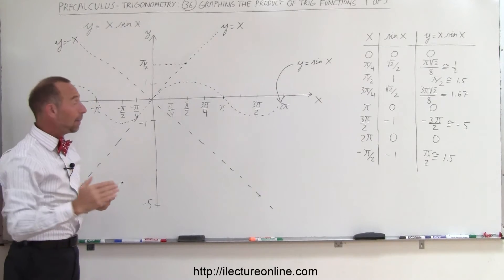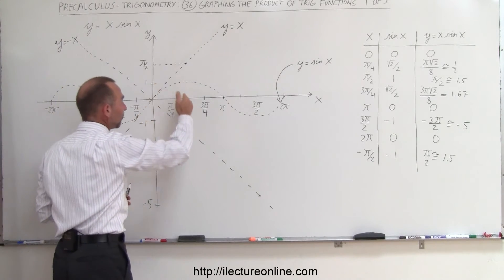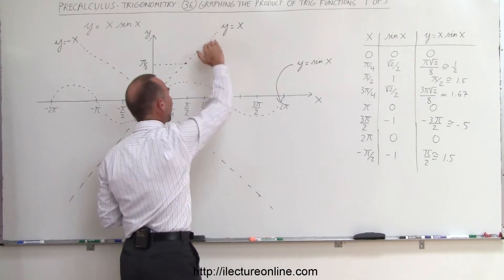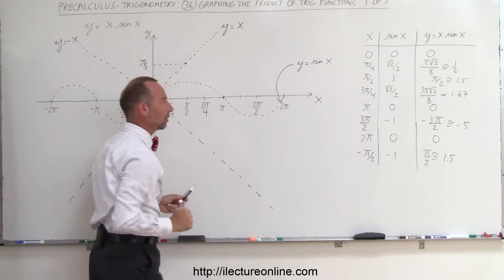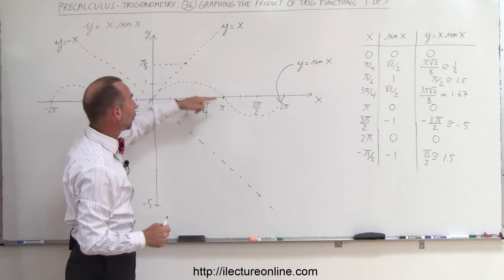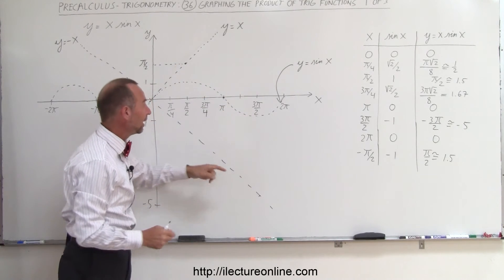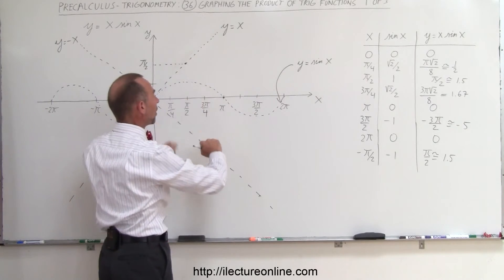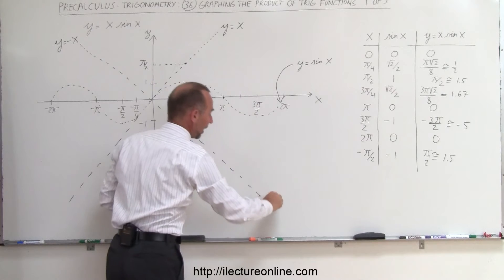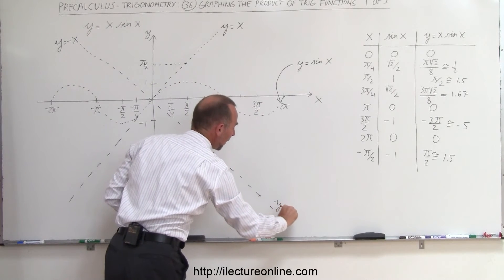You can then see that what happens is that this function here, the sine function, will oscillate like it normally does, but it will be bounded by these two lines right here. So that the maximum value can only be 1 times this value, or negative 1 times this value, and then anything in between will be smaller. So it will still oscillate, but it will be bounded by the line y equals x and the line y equals minus x.